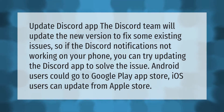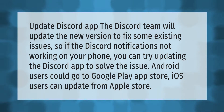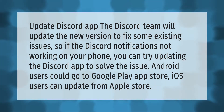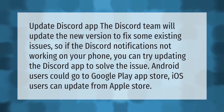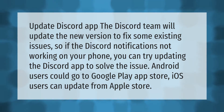Update the Discord app. The Discord team will update the new version to fix some existing issues, so if Discord notifications are not working on your phone, you can try updating the Discord app to solve the issue. Android users can go to the Google Play App Store; iOS users can update from the Apple Store.